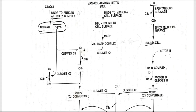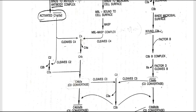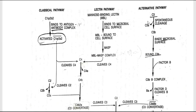Factor B, bound to C3b, is cleaved by Factor D, generating Ba and Bb. Bb remains associated with C3b to give rise to the enzymatic complex C3bBb, which acts as a C3 convertase. This C3 convertase cleaves C3, and from here C3b enters into cleaving C5. The C5b binds to the cell surface, combines with C6, and forms the membrane attack complex — so the rest of the pathway and the final product are the same as in the classical pathway.